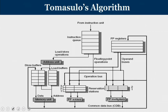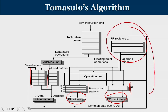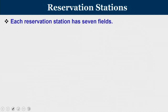The overall structure includes reservation stations for adders and multipliers — each functional unit has its own reservation station. The load/store queues act as reservation stations for the memory unit, called load buffers and store buffers. The CDB updates the floating-point register file and is also connected to the inputs of all reservation stations.